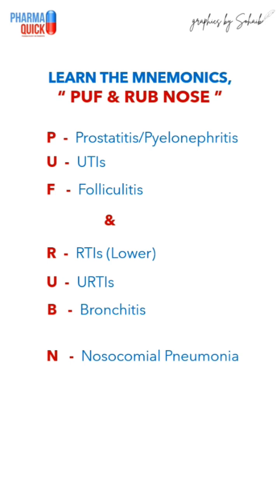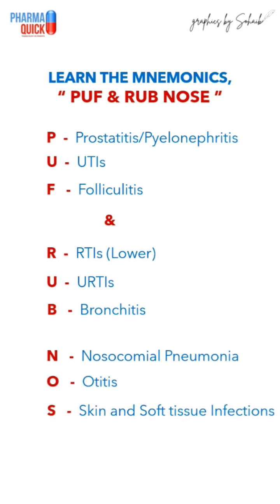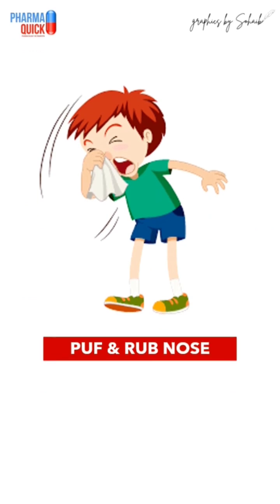N stands for nosocomial pneumonia, O for otitis, S for skin and soft tissue infections, and even edema. So 'PUFF AND RUB NOSE' covers all the clinical uses of levofloxacin. Subscribe for more quick videos on all upcoming topics.